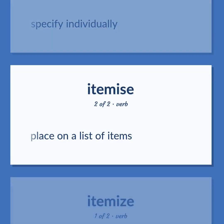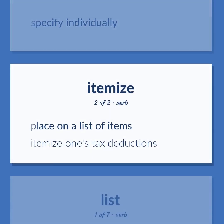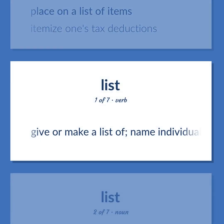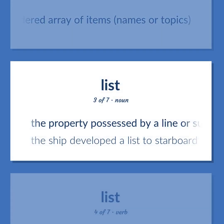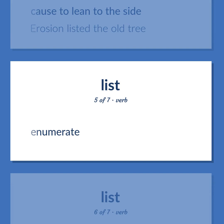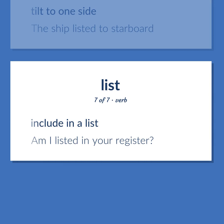List / Enumerate: Specify individually. Place on a list of items. Itemize one's tax deductions. Give or make a list of; name individually; give the names of. A database containing an ordered array of items, names, or topics. The property possessed by a line or surface that departs from the vertical — 'The ship developed a list to starboard.' Cause to lean to the side — 'Erosion listed the old tree.' Enumerate. Tilt to one side — 'The ship listed to starboard.' Include in a list — 'Am I listed in your register?'